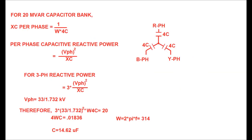The rating of the capacitor bank is 20 MVAR. The capacitive reactance per phase is XC = 1 / (ω × 4C), since the equivalent capacitance per phase is 4C. The per-phase capacitive reactive power is equal to V_phase² / XC.